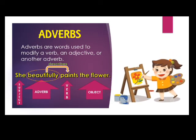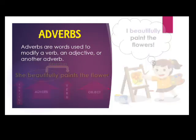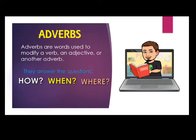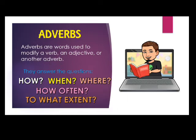As you can see, it is not the flower which is beautiful. The flower may be beautiful, but according to the sentence, it is not the flower being beautiful — it is the way the subject paints it. Adverbs answer the questions: how, when, where, how often, and to what extent.